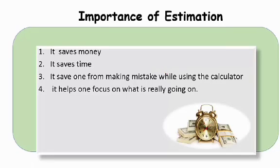It saves money, it saves time, and it saves one from making mistakes while using the calculator. This one is very essential, especially for students. You cannot have an idea that 3000 times 1 is going to give you 3000 and you end up having something like 3. That means automatically something is wrong.